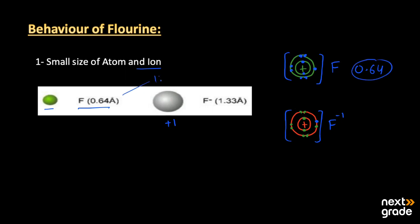The size of its atom is 0.64 angstrom, where 1 angstrom equals 10 raised to power minus 10. When it changes into F minus, its size is 1.33 angstrom. There is an increase in its size when it changes into its ionic form or anion. This is its first peculiar behavior.